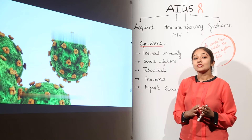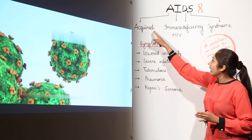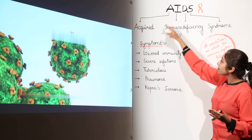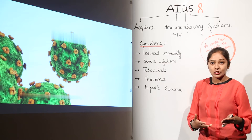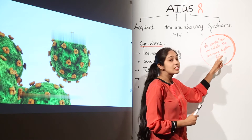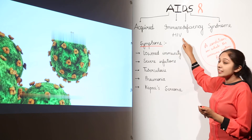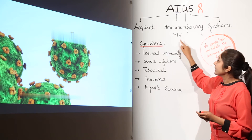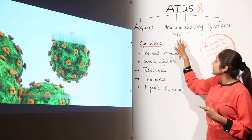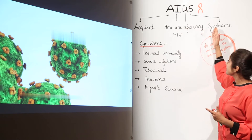AIDS — one of the most deadly diseases of the world. It is Acquired Immunodeficiency Syndrome. From the word 'immunodeficiency' you can make out that AIDS is a condition in which the immune system fails, because the HIV virus actually attacks the immune cells and immune system of the body, causing this syndrome.